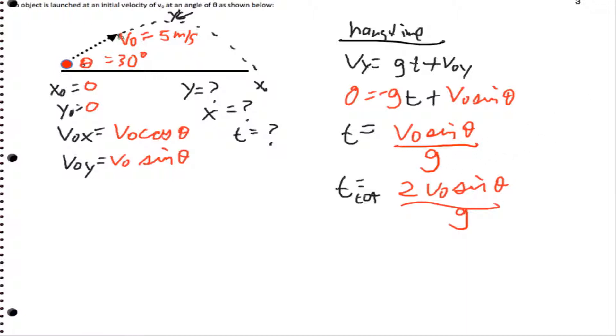So if I wanted to get the maximum x distance, that's going to be x equals v0xt plus x0, and that's going to end up being x equals v0x, which is going to be v0 cosine theta times t, which is 2 v0 sine theta over g.